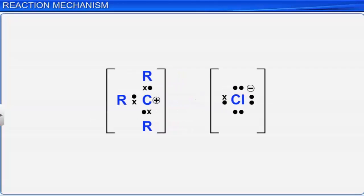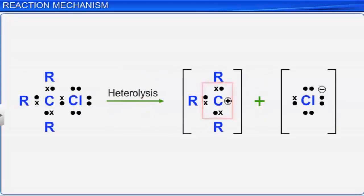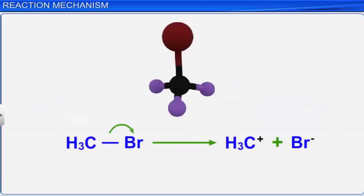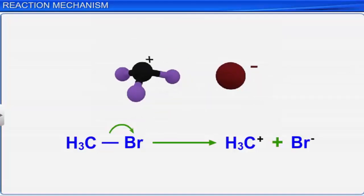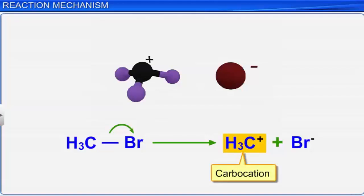After heterolytic cleavage, the atom that loses the bonded electrons acquires a positive charge. For example, in the heterolytic cleavage of bromomethane, the shared electron pair goes to the bromine atom, leading to the formation of a bromide anion and a methyl cation. A positively charged carbon, which is the methyl cation here, is called a carbocation or carbonium ion.